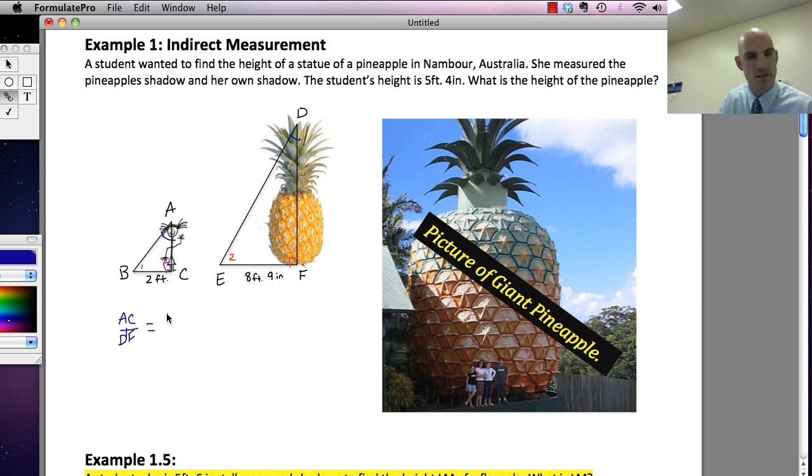over the height of the pineapple. So we're going to compare height to height. That's going to be equal to BC, which is the shadow, over EF, which is also the shadow. When we do this, okay, what we're saying is by angle-angle, these triangles are similar. So by angle-angle, these triangles are similar. So these proportions should be equal, okay?